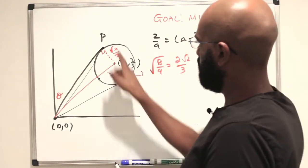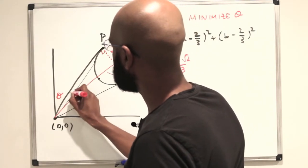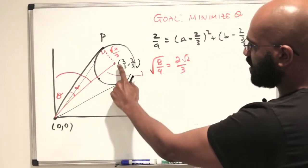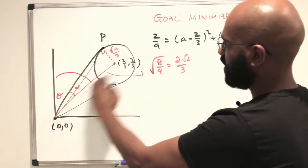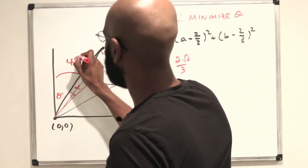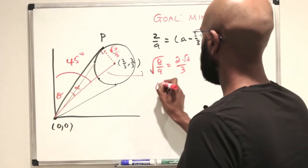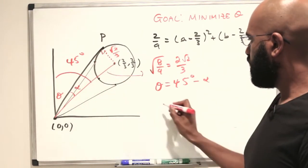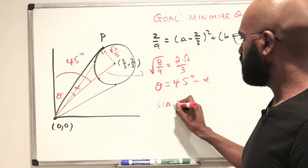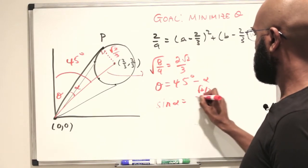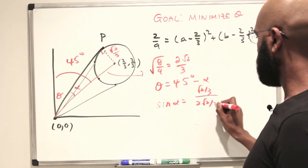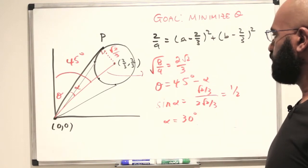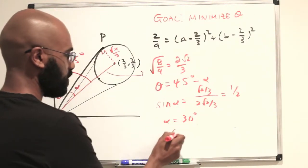In this right triangle we can find angle alpha, which relates to theta because the line to the center lies on y equals x, cutting the quadrant exactly in half — so the full angle to the center is 45 degrees, and theta equals 45 degrees minus alpha. The sine of alpha equals (root 2 over 3) divided by (2 root 2 over 3), which equals one-half. So alpha is 30 degrees, and consequently theta is 15 degrees.